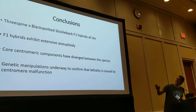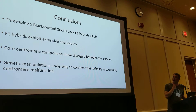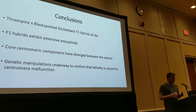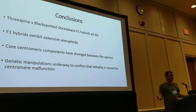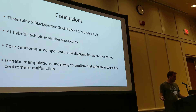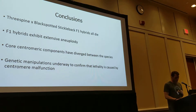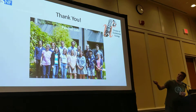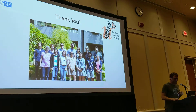In conclusion: three-spined and black-spotted hybrids all die. The F1 hybrids exhibit extensive aneuploidy. The core centromeric components have diverged considerably between these species. And genetic manipulations are underway. With that, I want to thank the lab and funding sources, and I'll take questions.